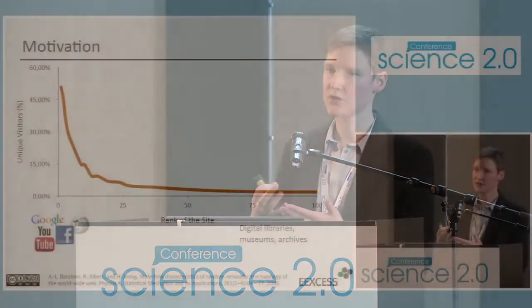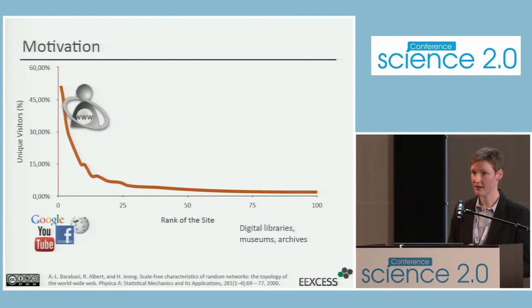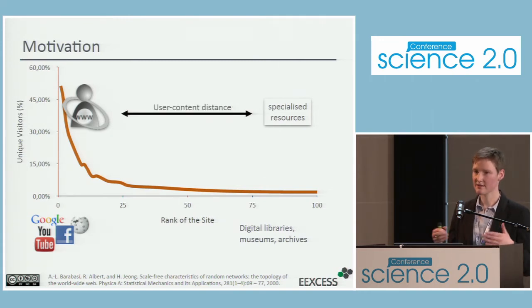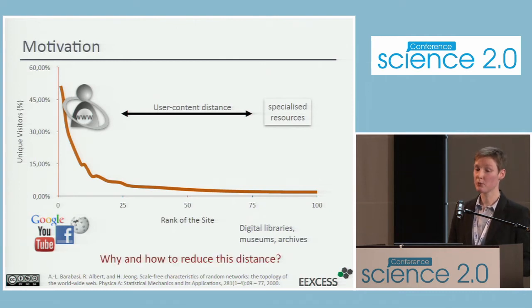On the other end of the distribution, we have websites that attract only a small number of users each. So our users are on the tall head end of the distribution, and our specialized content is on the other end. That's the problem I want to address in this talk — the long user-content distance. How can we bridge this content gap, and why should we do so?